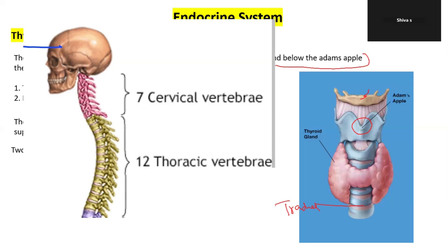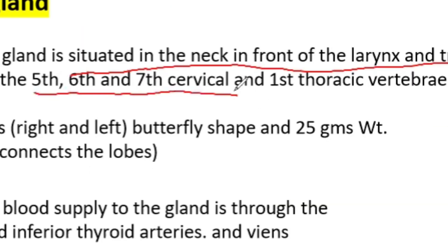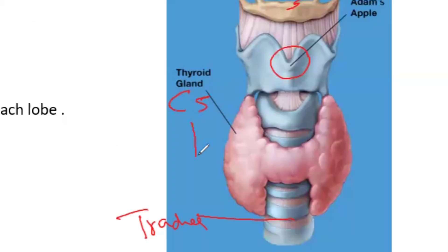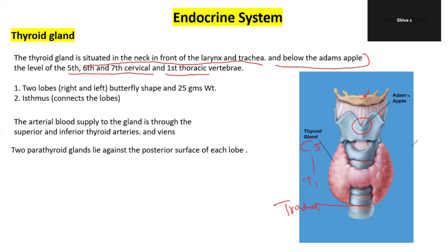The thyroid gland extends from the 5th-6th-7th cervical vertebrae to the 1st thoracic vertebra. It has two lobes — right and left — with a butterfly shape and weighs approximately 25 grams.